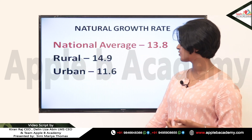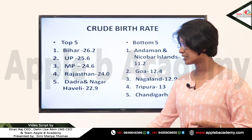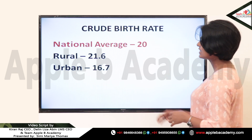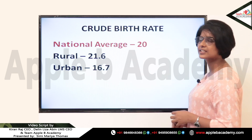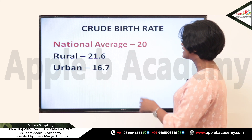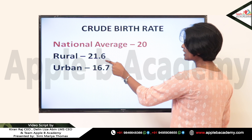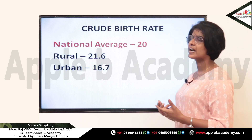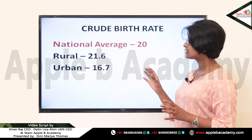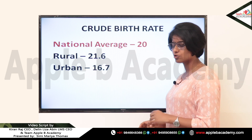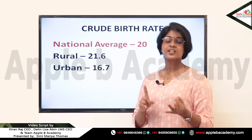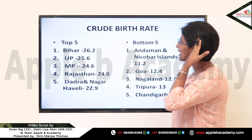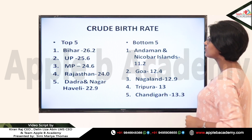We will cover crude birth rate, death rate, infant mortality, and the national growth rate. First, the crude birth rate — the national average as per SRS bulletin May 2020 is 20, the rural rate is 21.6, and urban is 16.7. Note that this data differs from the NITI Aayog data; check whether a question is based on NITI Aayog data, National Family Health Survey data, or SRS bulletin data and answer accordingly.